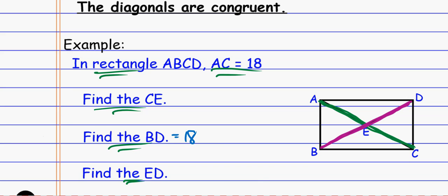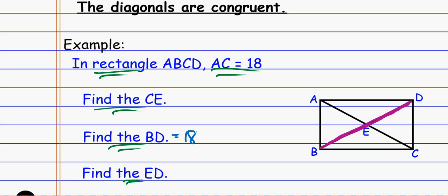Now I have to use the fact that it's still a parallelogram, even though it's a rectangle. The rectangle has the special property that the diagonals are the same, but parallelograms also have the property that the diagonals bisect each other. So if each diagonal is 18, they bisect each other, which means the smaller pieces on each end have to be nine each. Likewise, for the other diagonal, since the whole thing is 18, each piece has to be nine and nine.